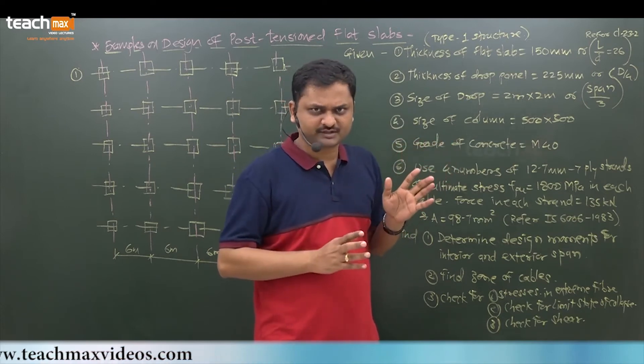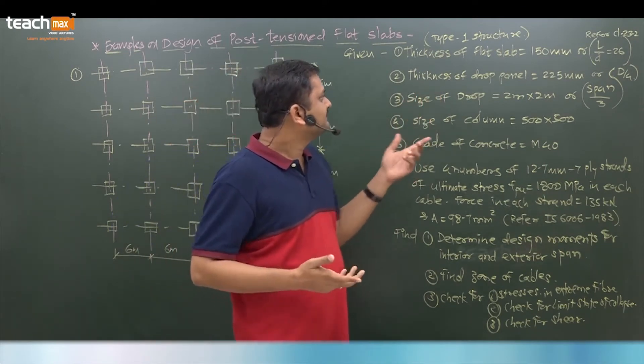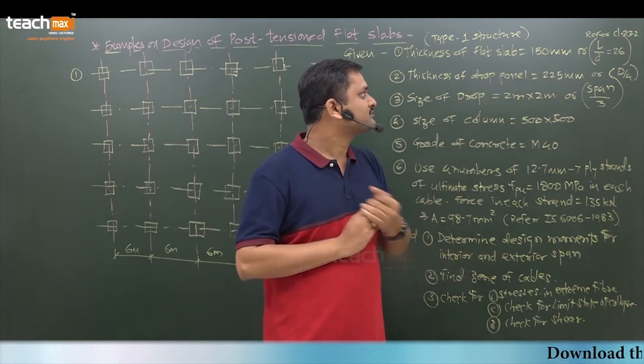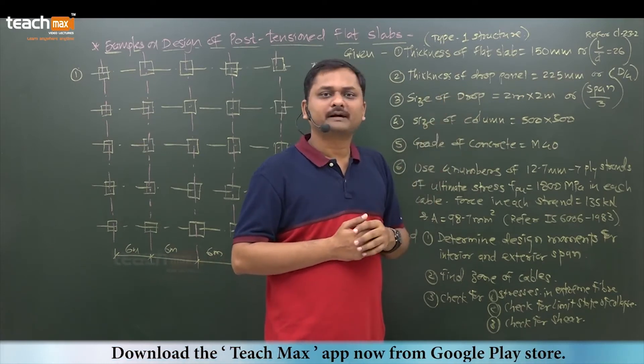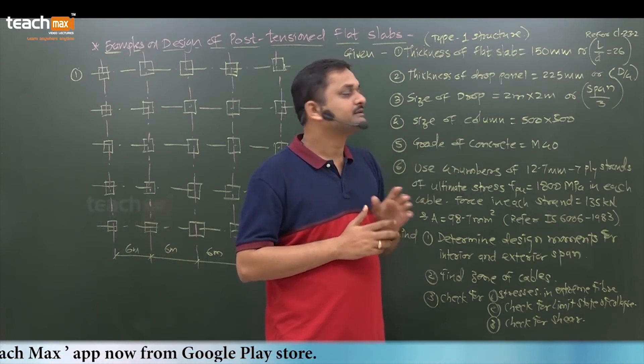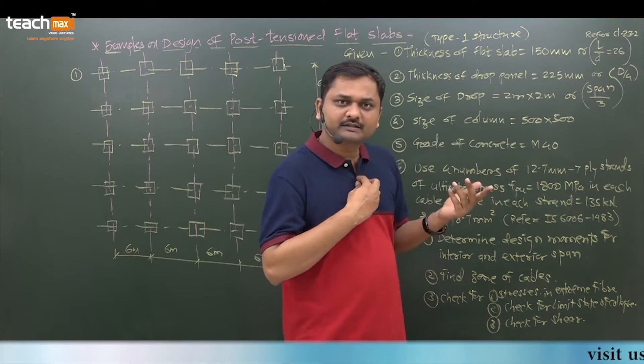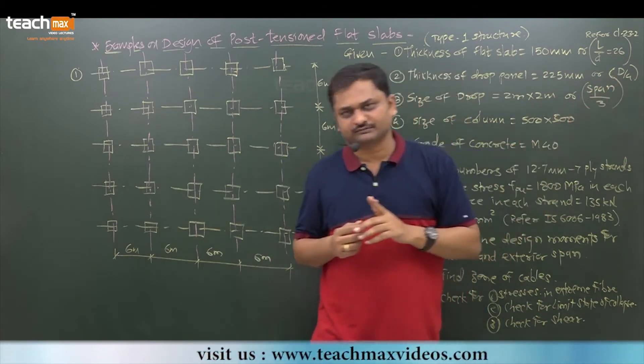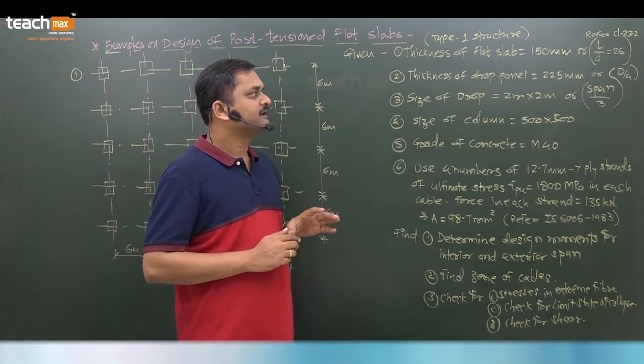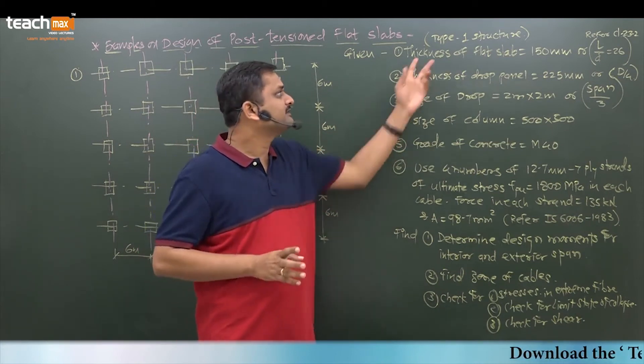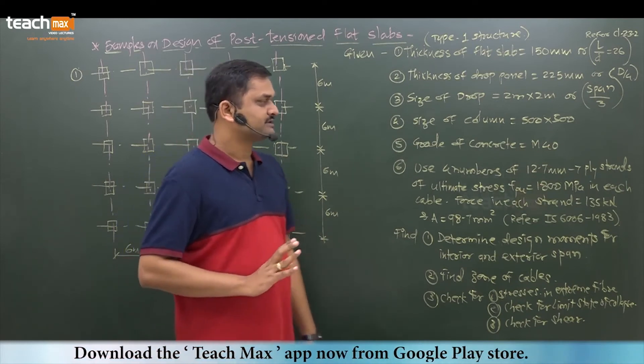Next, thickness of drop panel. This is given to you in this example as 225 mm. Actually it is 150 plus 75, so the total thickness of the drop panel is 225 mm from top. If not given, how you calculate: you can assume minimum D/4, where D is the depth of the flat slab thickness. Overall depth divided by 4 gives the thickness of drop. You can add the thickness of flat slab to get the total thickness of the drop panel.